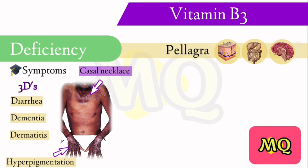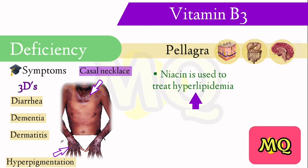Clinically, niacin at doses of 1.5 grams per day can be used to treat hyperlipidemia, because it strongly inhibits lipolysis in adipose tissue, the primary producer of circulating free fatty acids.